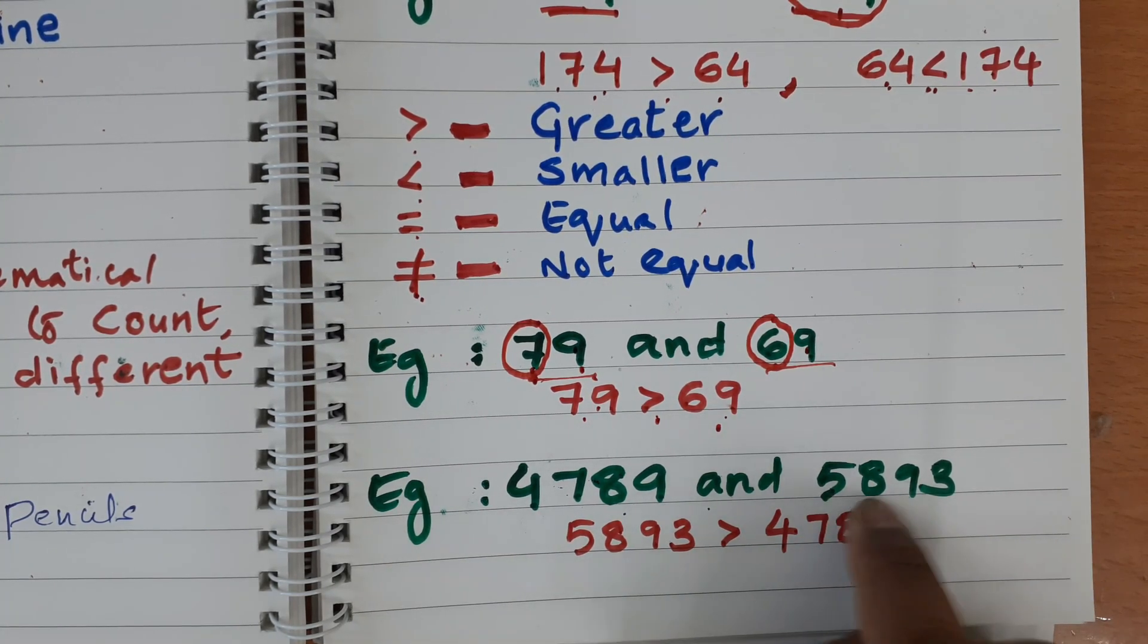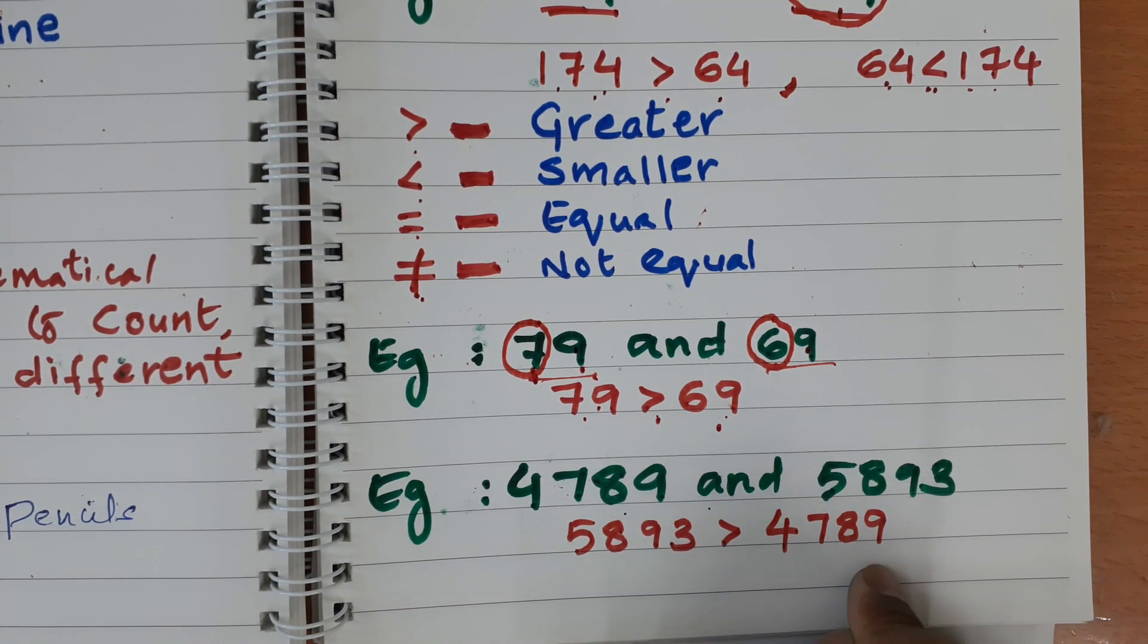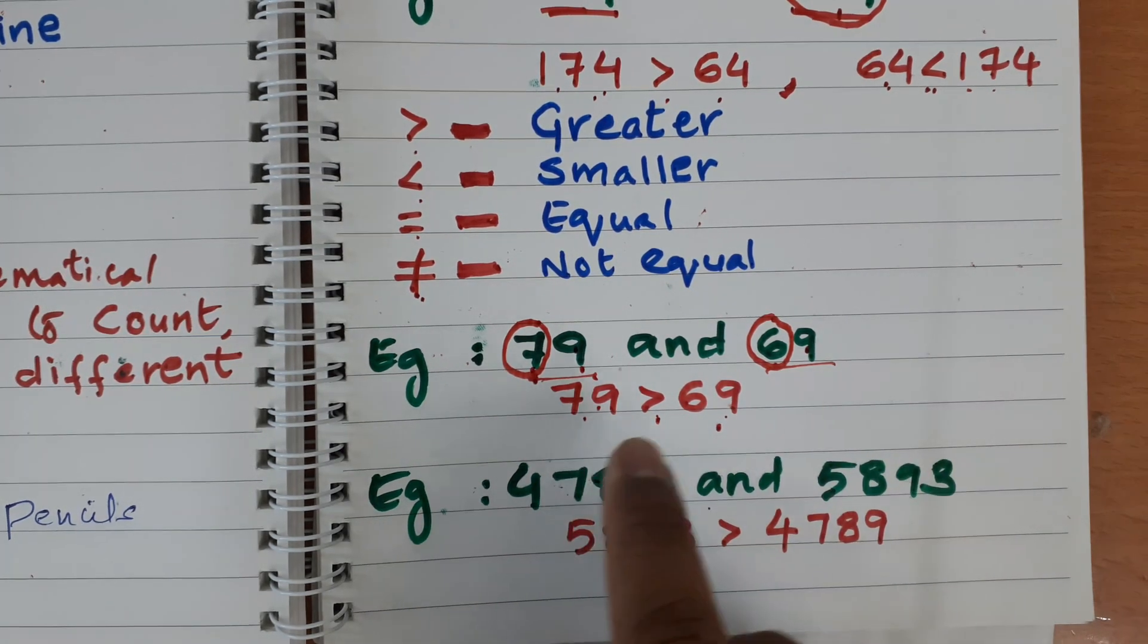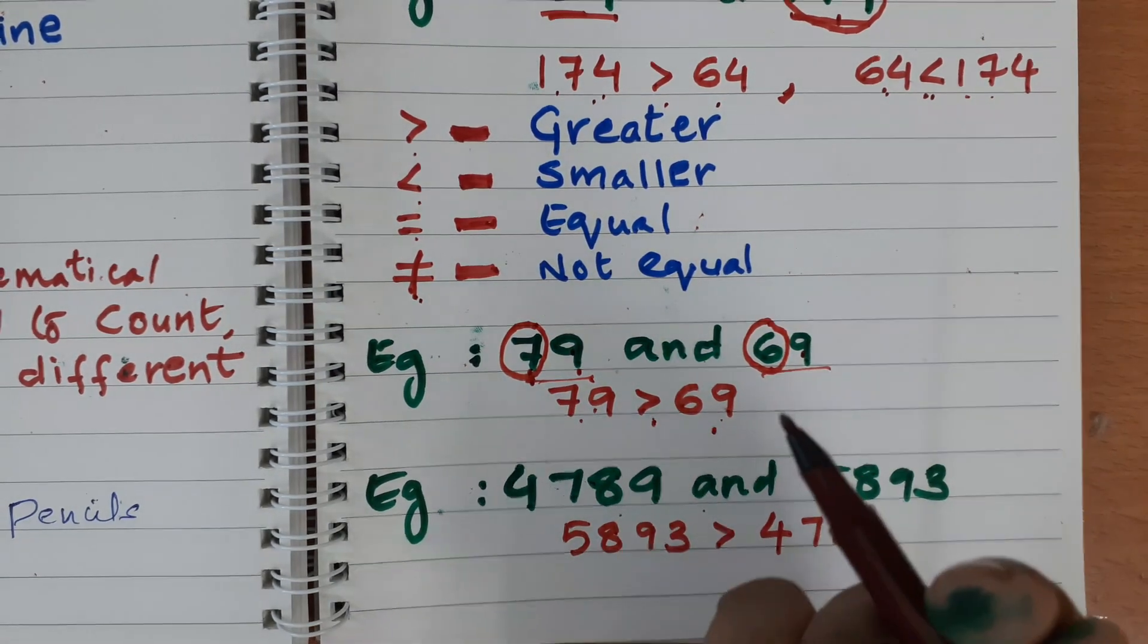So 5,893 greater than 4,789. So in this way you can compare 4 digit number or any other number with different digits.